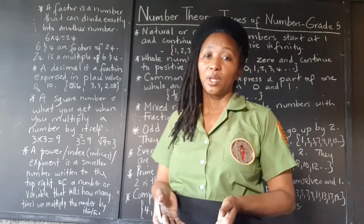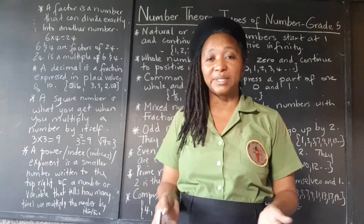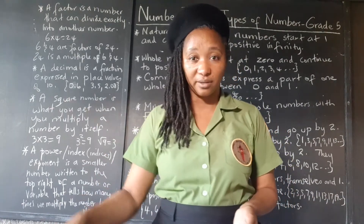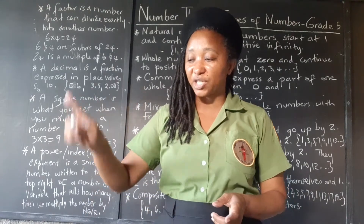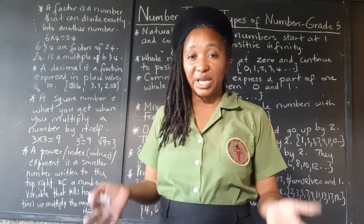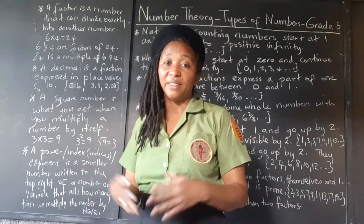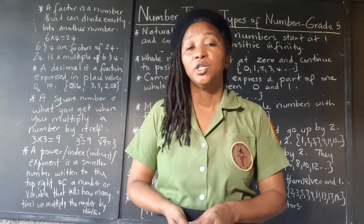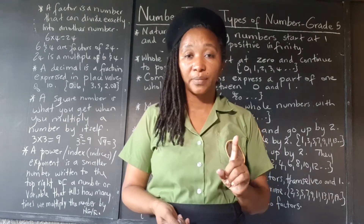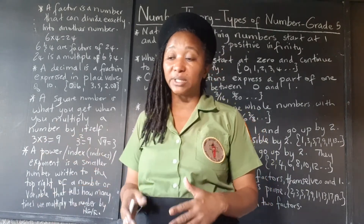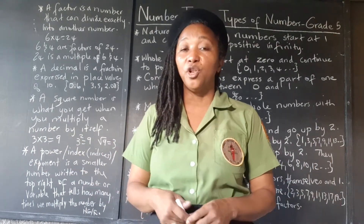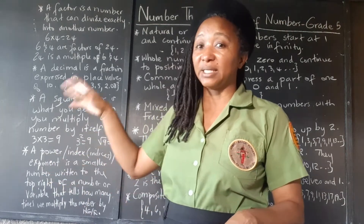So whenever we start counting, if you have a group of items that you need to count, what number do you start counting at? One. You assign each item to a number and you keep going until you reach the end of those items, and then you declare how many. So natural numbers or counting numbers start at one and go on and on. You can stop counting a group of things because they are finite, but the numbers themselves — the possibility — is infinite.